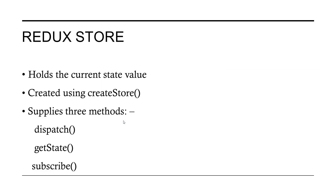The Redux store holds the current state value and we create it using the createStore function that comes from Redux. It has three methods: dispatch, which is used to change our state; getState, which lets us get the current state; and subscribe, which is a more advanced concept I will cover in upcoming videos.